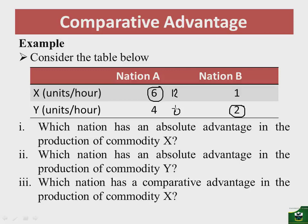Instead of producing X, we take those six hours and channel them to the production of commodity Y. This means nation B will produce 12 units of commodity Y.